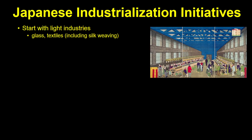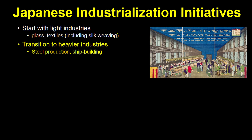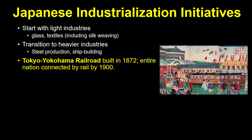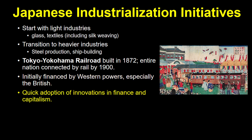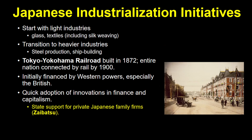Japanese efforts to study the West were on a much larger scale. As for industrialization, they began with light industry, like glass and textiles, including silk weaving. Eventually they were able to transition into heavier industries like steel production and shipbuilding. They built a railroad connecting Tokyo to Yokohama in 1872, and by 1900, every major city was connected by rail. Much of this was initially financed by Western powers, especially the British. But the Japanese were also quick to adopt innovations in finance and capitalism, with the state providing support for private Japanese family firms called Zaibatsu. We'll talk more about capitalism in 5.7, which will be in the next video.